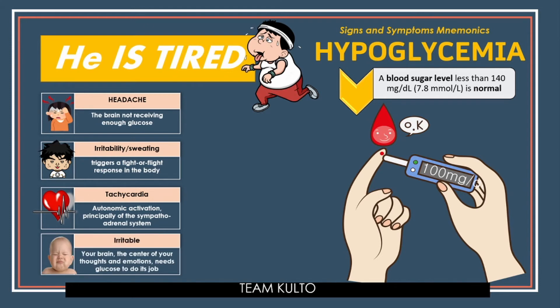S is for Irritability. Why does the patient with hypoglycemia become irritable? The brain — the center of your thoughts and emotions — needs glucose to do its job. If you don't have enough glucose to feed your brain, the brain can go haywire. Even though it seems like an emotional response, it is really a physical response to low blood sugar levels.